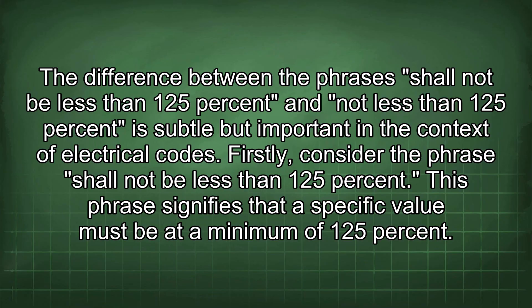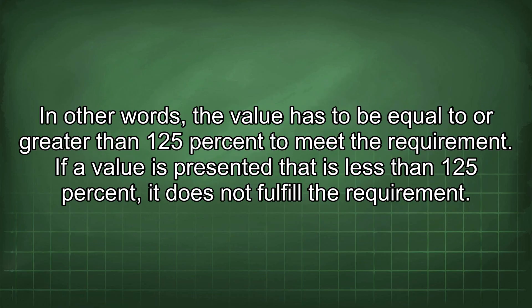The difference between the phrases 'shall not be less than 125%' and 'not less than 125%' is subtle but important in the context of electrical codes. The phrase 'shall not be less than 125%' signifies that a specific value must be at a minimum of 125%. In other words, the value has to be equal to or greater than 125% to meet the requirement.